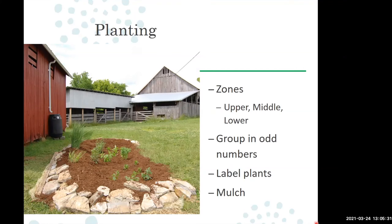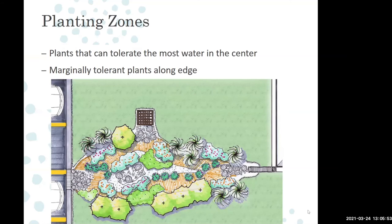Things like grass clippings, leaf mold, and straw are lighter weight and will wash around more easily, and in a perennial garden they break down quickly, meaning you'll have to apply a lot more material every year. This cross-section view shows the different planting zones: the lower wet zone at the bottom, the middle zone just around that, and the upper zone on the outskirts — those plants are going to be marginally tolerant along the edges.